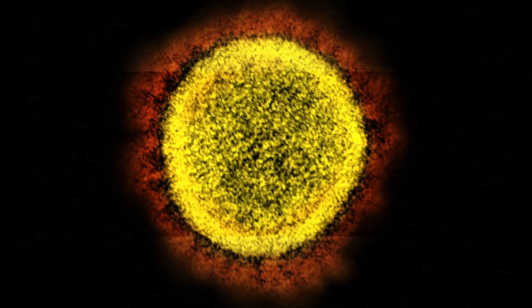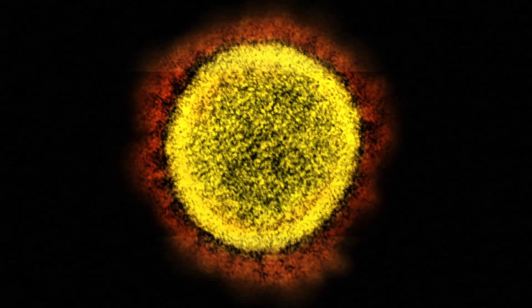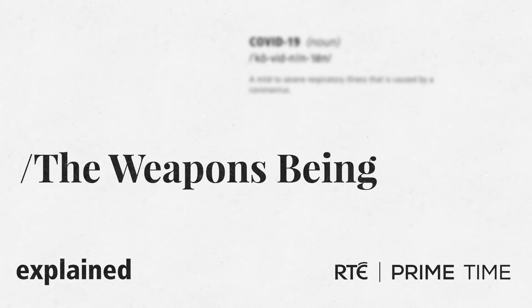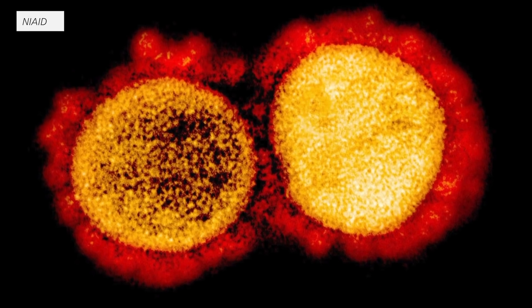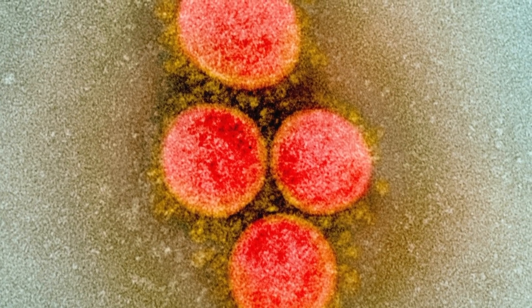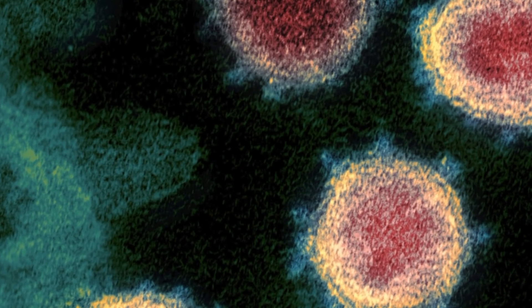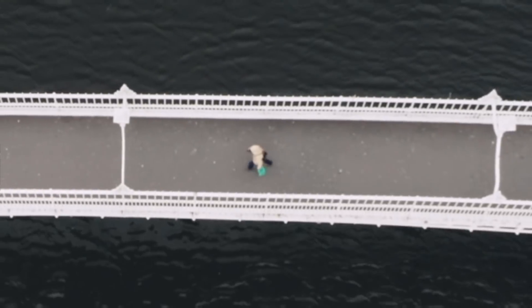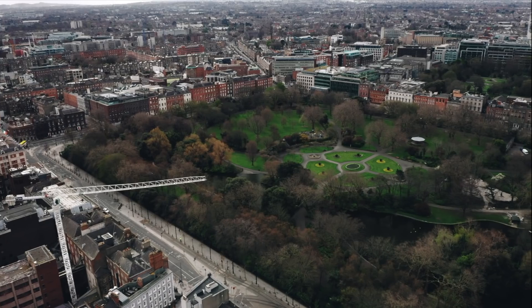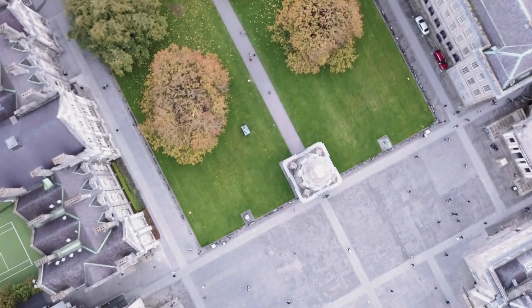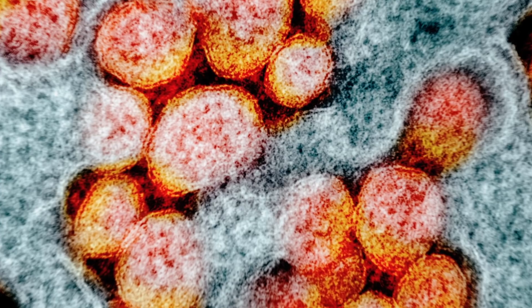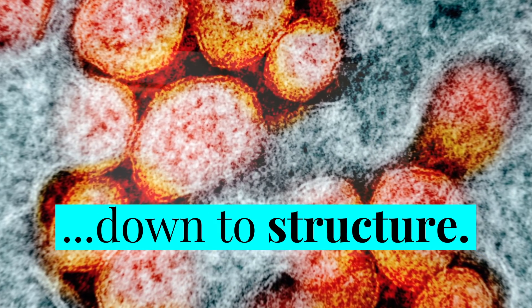And knowing that is key to understanding how we can use our weapons against it. The virus has weaknesses, and across the world, teams of scientists are working to exploit them in different ways. To understand those weaknesses, you first need to understand how the virus functions and how your cells react. Viruses can't function outside of a host cell, and potential host cells are particularly available in our throat and lungs.